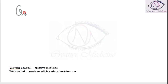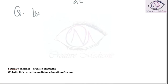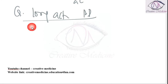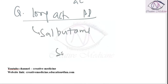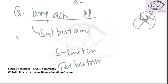Which of the following are long-acting bronchodilators? Long-acting bronchodilators include salmeterol and terbutaline, but adrenaline is not a long-acting bronchodilator.